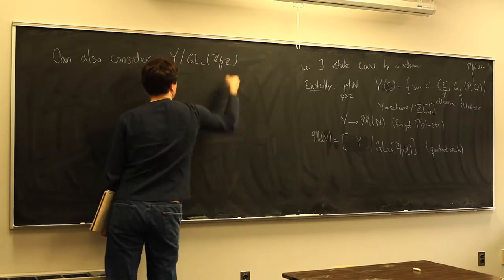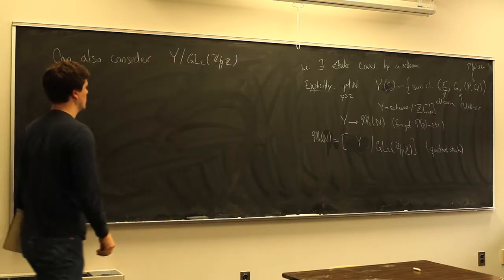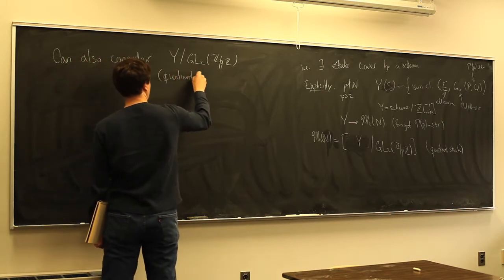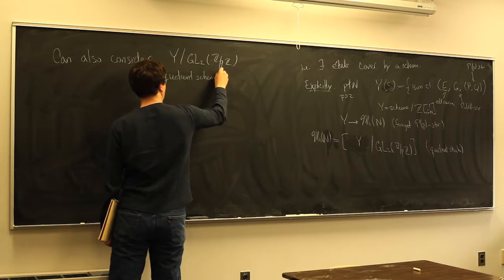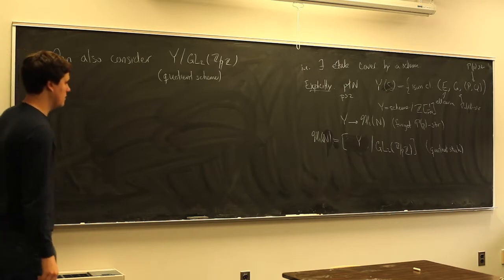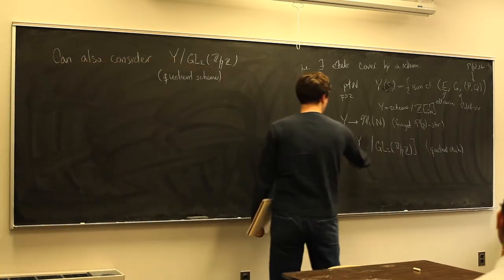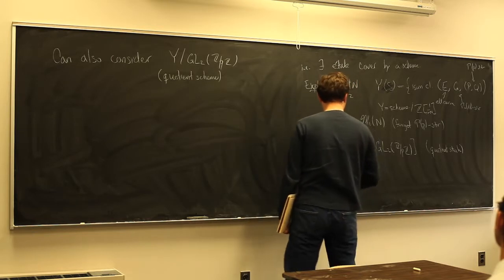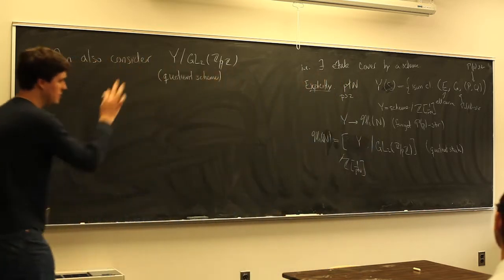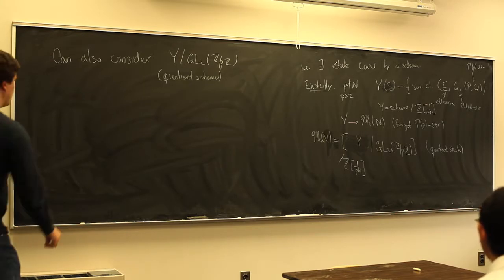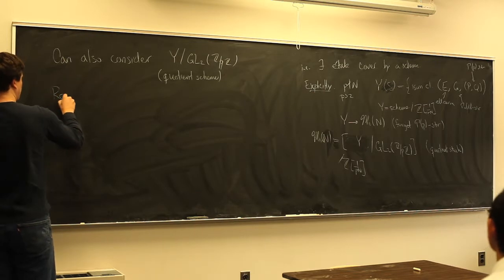You could also just take the scheme quotient instead of the stack quotient. So this is the quotient scheme, but only over Z[1/pn] — you have to invert this auxiliary prime p. This quotient scheme represents a certain functor.